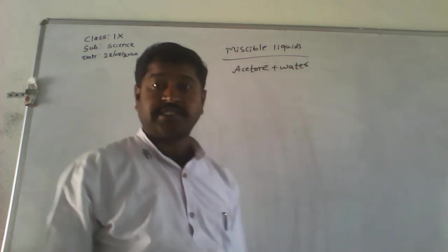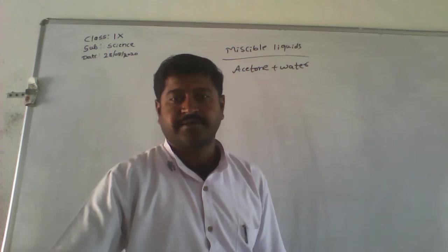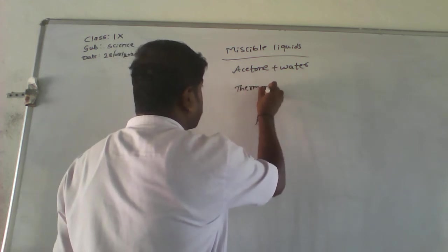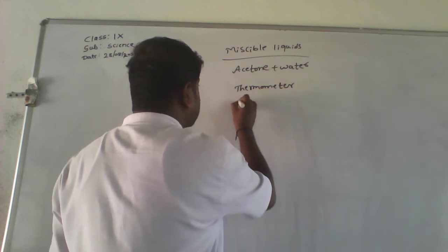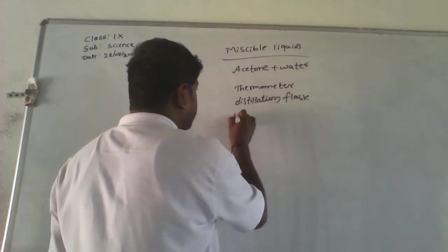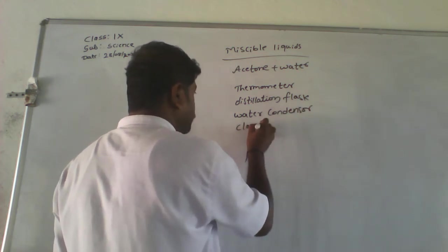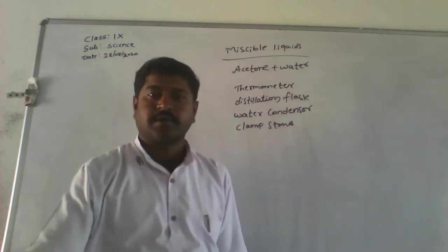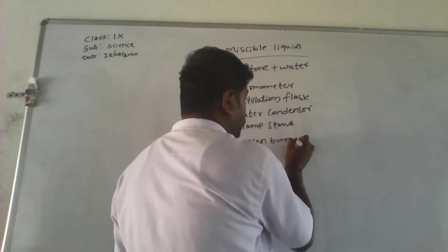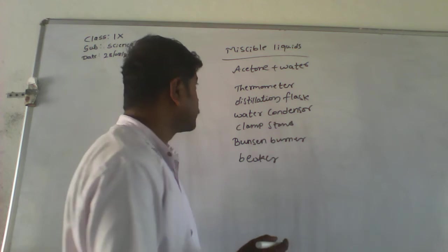So we have a mixture of acetone and water. To do this experiment, what is required first? We want a thermometer, then a distillation flask, a water condenser, a clamp stand, then a spirit lamp, and a beaker, among other things.